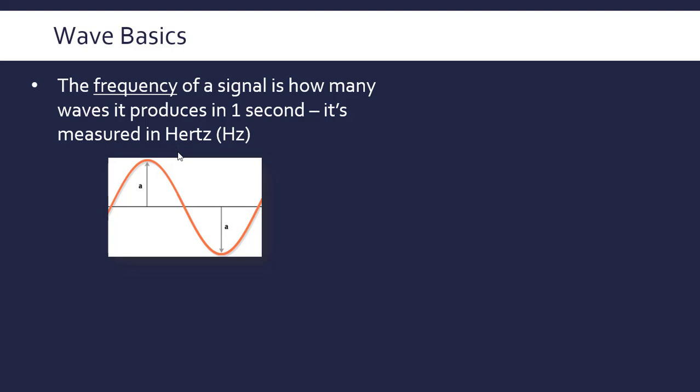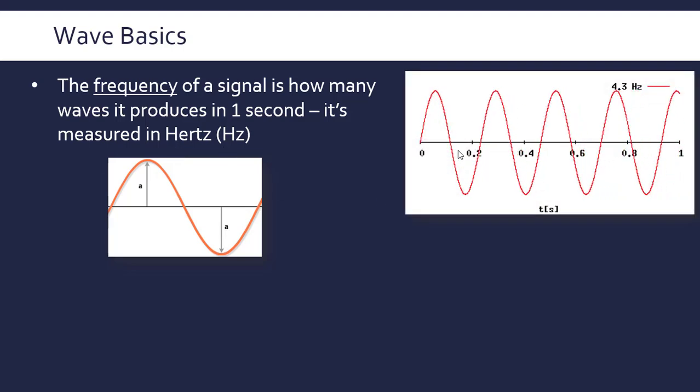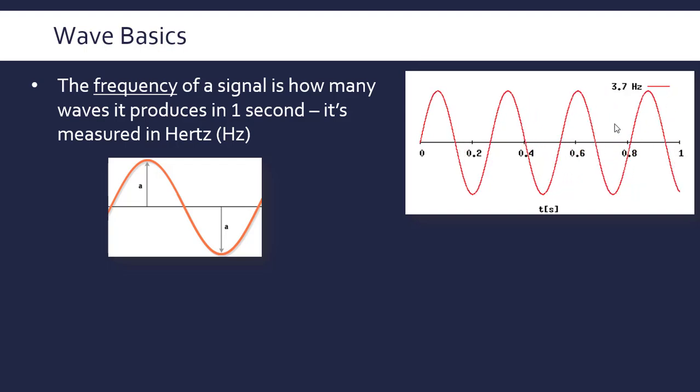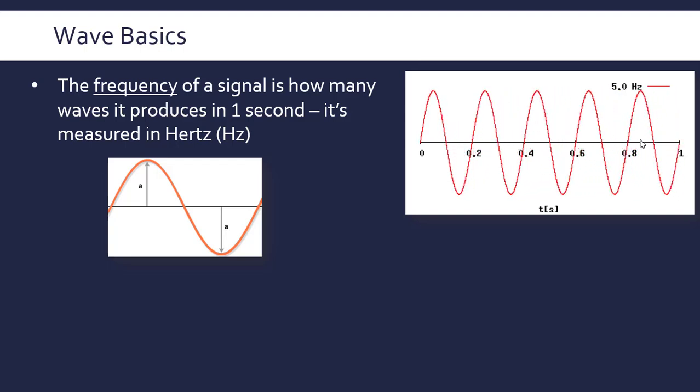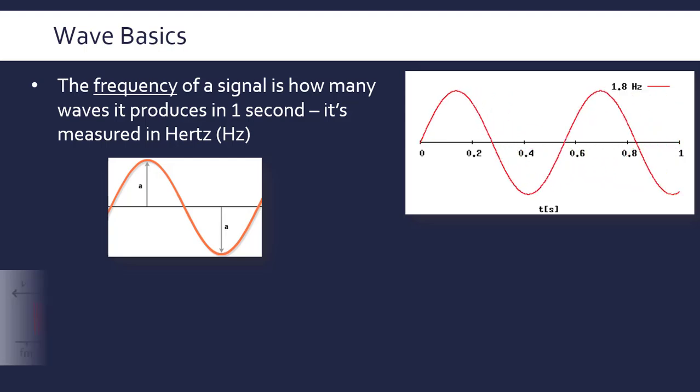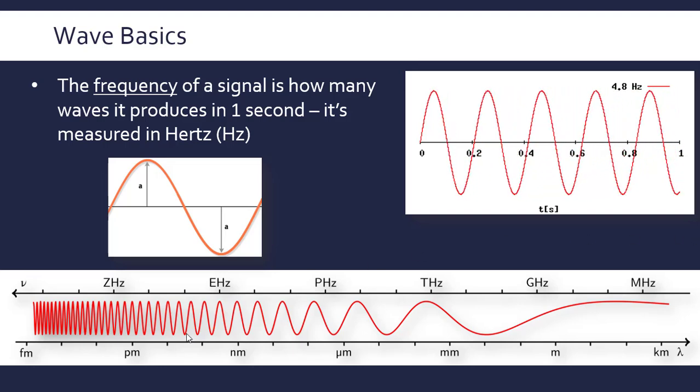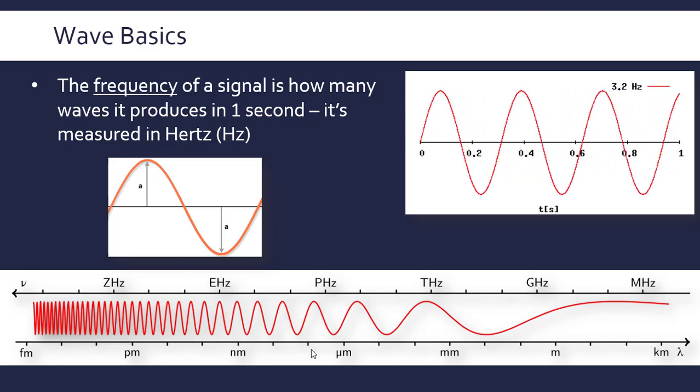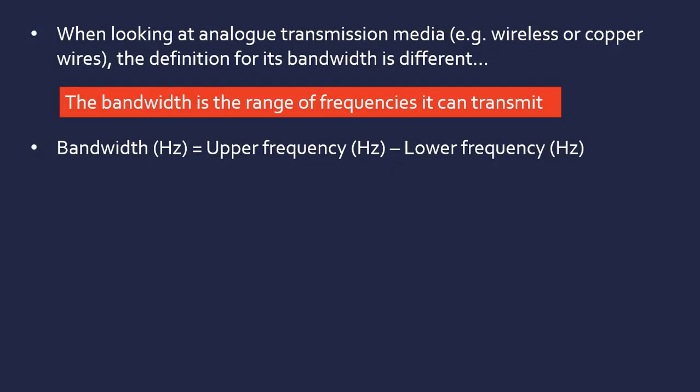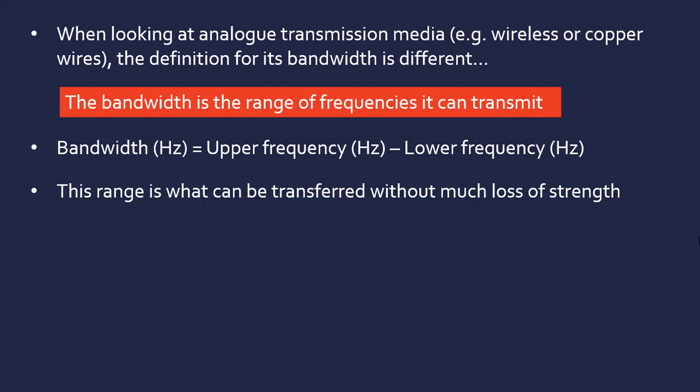We would count how many waves there are in a single second, and that would be its frequency measured in Hertz. Here you can see the frequency is increasing because the waves are getting smaller on this time scale. Different transmission media are going to work in different ways—they'll have a set range of frequencies they can accommodate, and there'll be a sweet spot where they can transmit this frequency to a good standard.